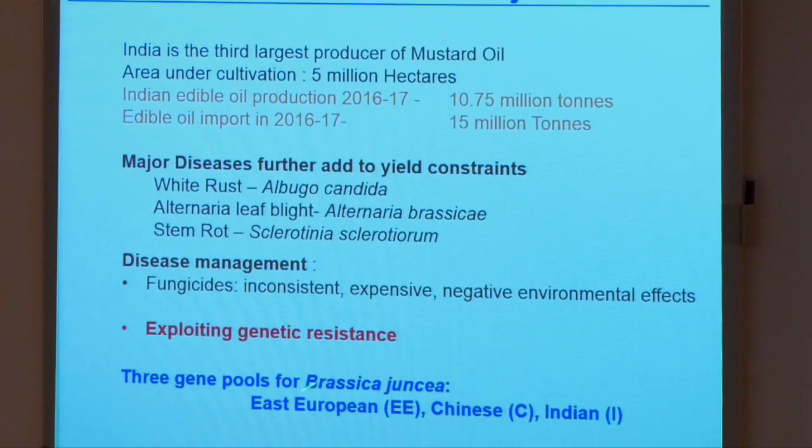In the case of Brassica, there are three major diversity or gene pools that we know of: the East European gene pool, the Chinese gene pool, and the Indian gene pool. Today I will talk about how we have improved white rust resistance using the resistance existing in these three germplasms.